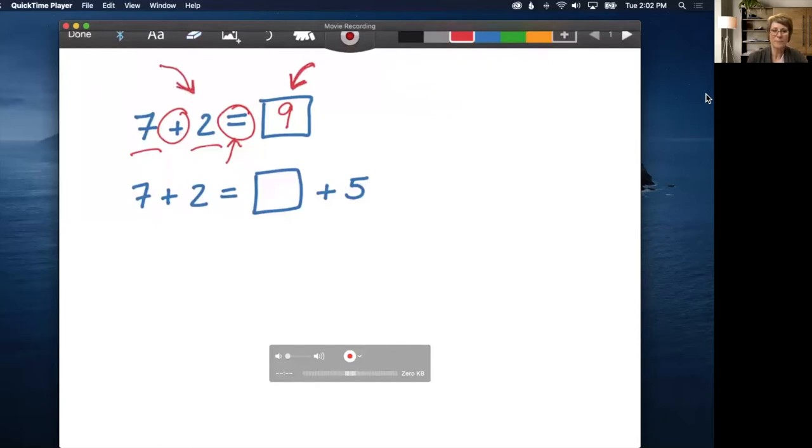Here's when you know your kids are using the equal sign as an operation as opposed to a relation: when you come to this bottom problem where we have seven plus two equals blank plus five.